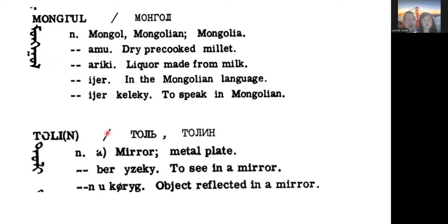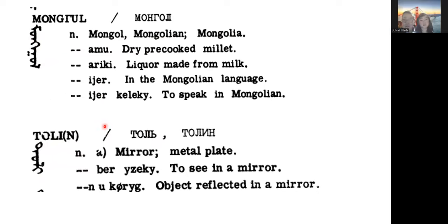Another example word is 'toli' — shown in Roman alphabet, Cyrillic, and traditional script. The meaning of 'toli' is 'mirror' or 'metal pipe' — that's the literal meaning. But 'toli' also has the meaning of 'dictionary,' so 'Mongol toli' means 'Mongolian dictionary.'